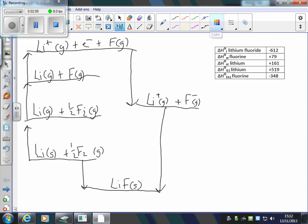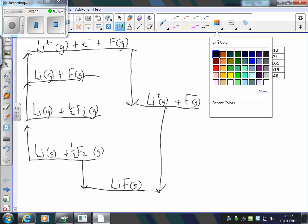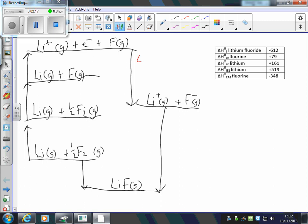Now I'm going to label all of my enthalpy changes. So fluorine gaining an electron to become F minus is my electron affinity. Gaseous ions forming an ionic solid is my lattice enthalpy. Lithium becoming lithium plus is my ionization energy.